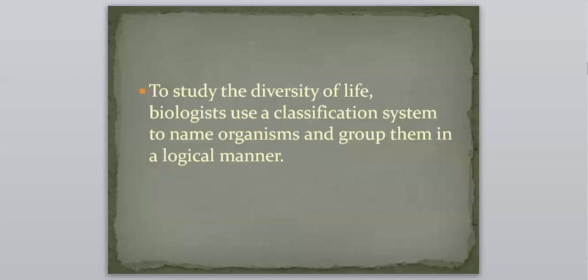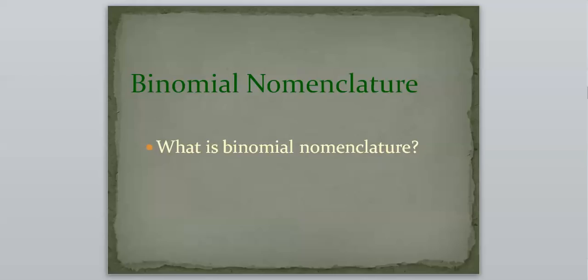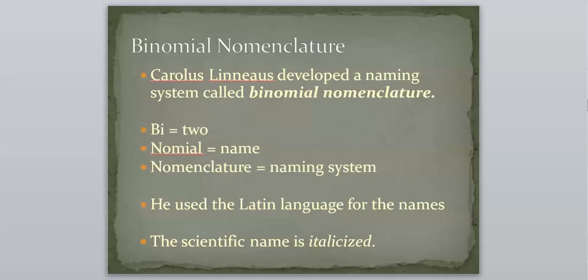So the most effective logical manner that they came up with was a system that is known as binomial nomenclature. Now, I know that sounds like a mouthful and it sounds confusing, but honestly, it's not that bad. So when we break down binomial nomenclature, it was founded by Carolus Linnaeus, and when we break down the words, it's pretty simple.